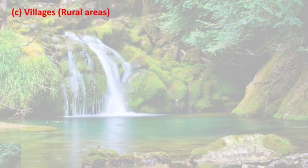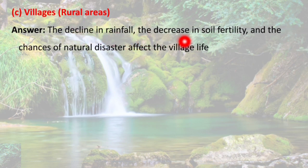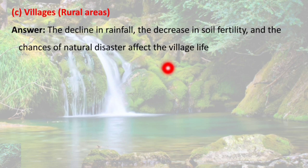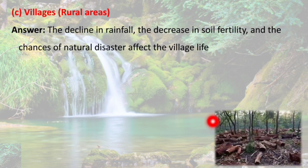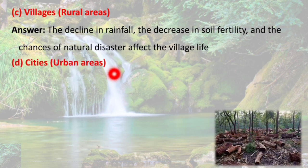Effect on villages and rural areas: the decline in rainfall, the decrease in soil fertility, and the chances of natural disaster affect village life. In villages, people are mostly dependent on agriculture. Deforestation reduces soil fertility, increases chances of flood or drought, and rainfall also decreases, all of which heavily affect rural life.